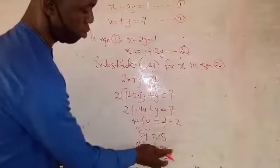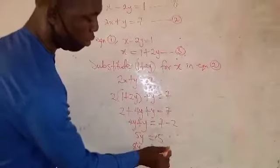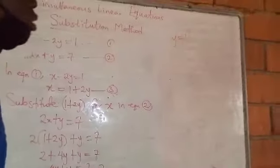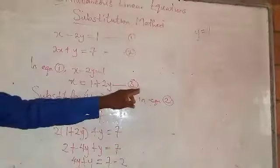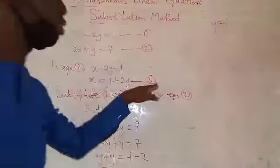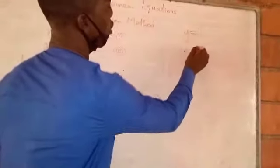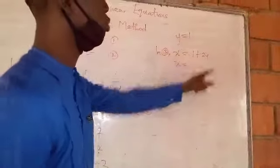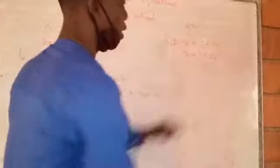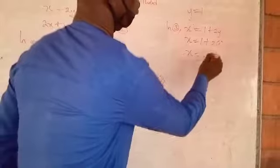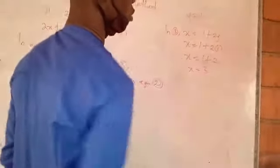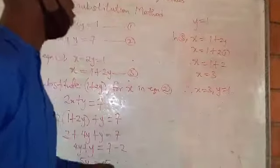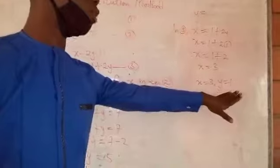So y equals 1. Having found the value of y, we go back to equation three, which is the easiest equation to find x. Equation three says x equals 1 plus 2y, that is 1 plus 2 times 1, because our y is 1. So x equals 1 plus 2, therefore x equals 3 and y equals 1. We have just solved these two equations by finding the values of x and y. Thank you.